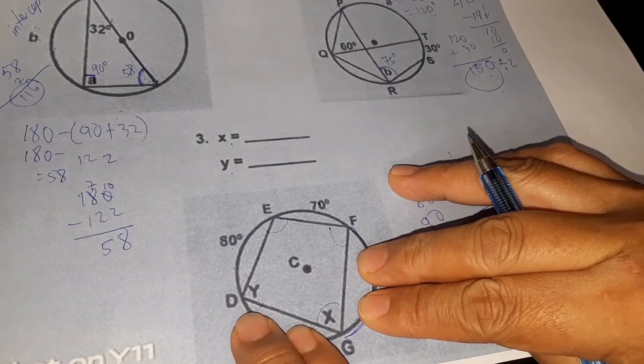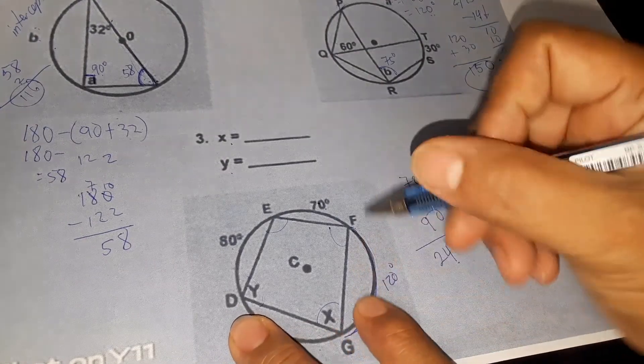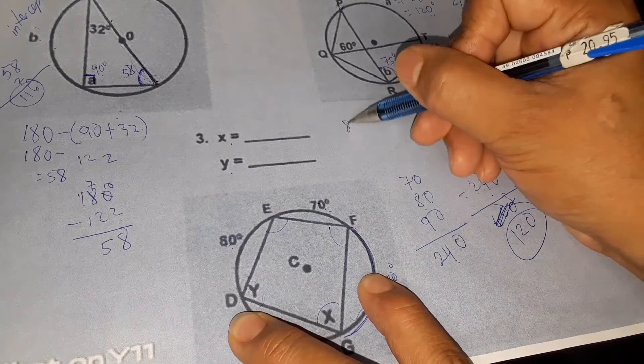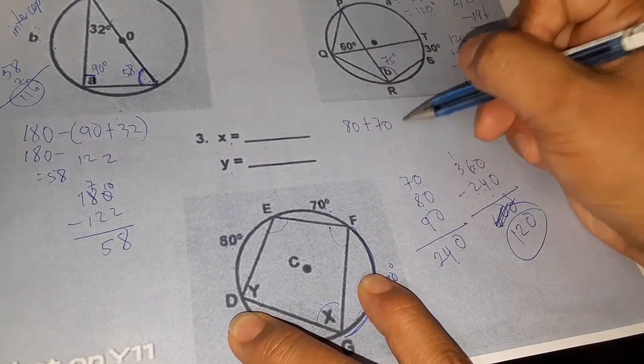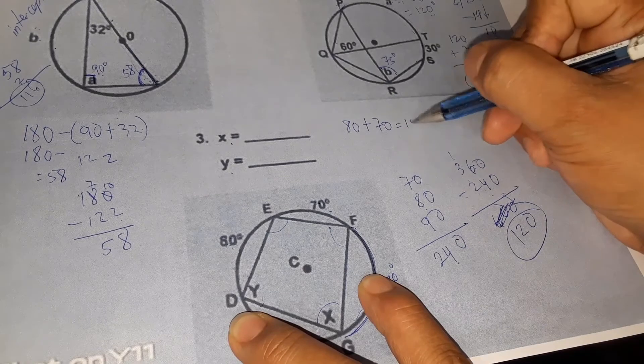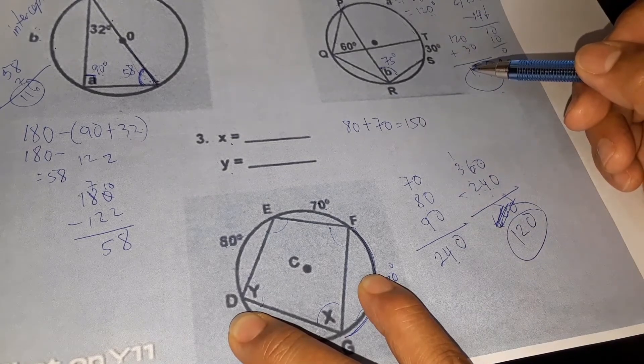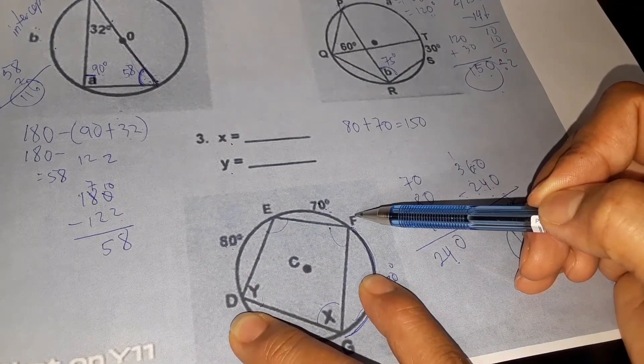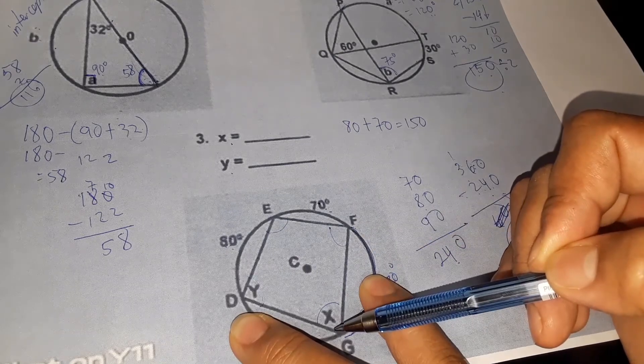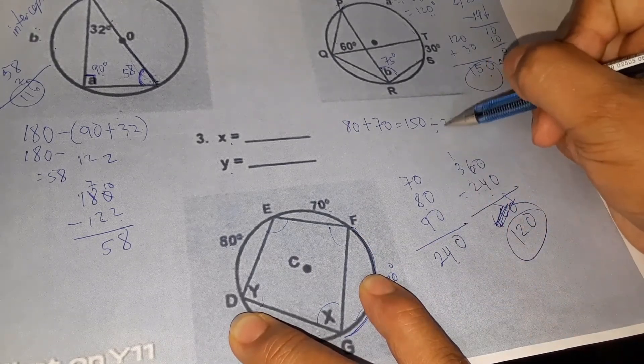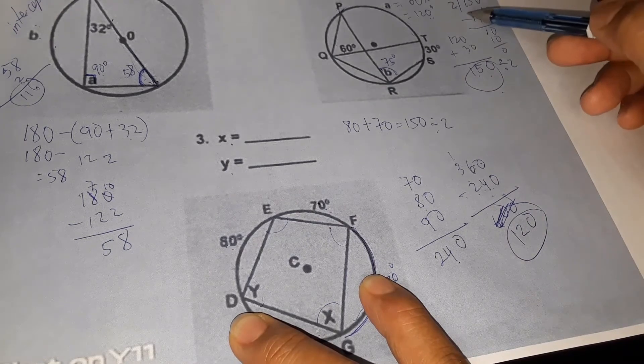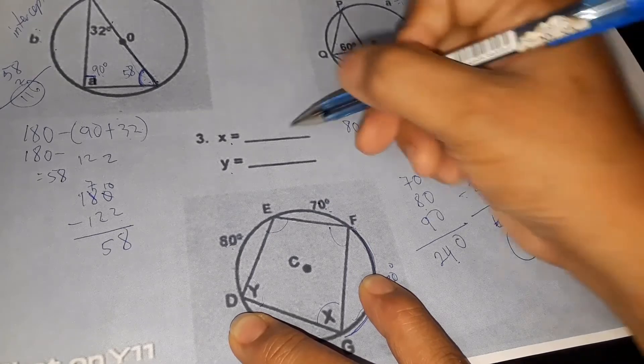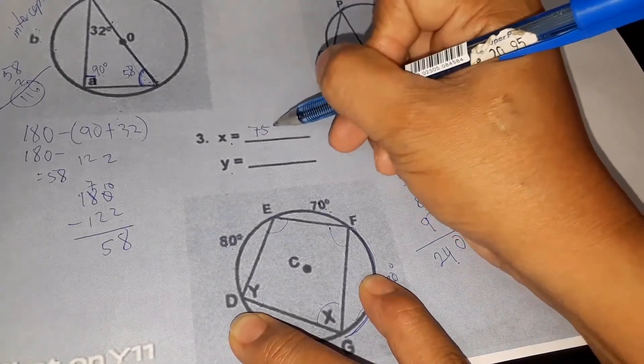Now we'll get x. How do we get x? X is an inscribed angle and its intercepted arc is 80 and 70. So we add 80 plus 70 equals 150. And since this is an intercepted arc, we divide it to get the inscribed angle. So divided by 2. 150 divided by 2 equals 75. So we have x equals 75 degrees.